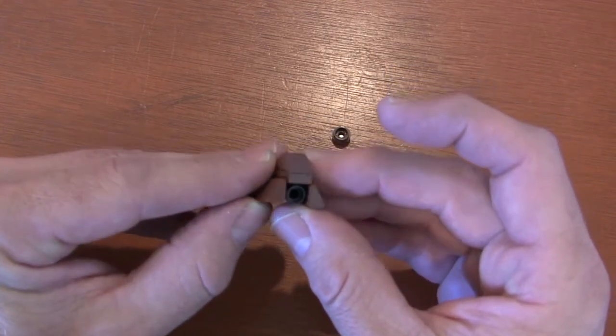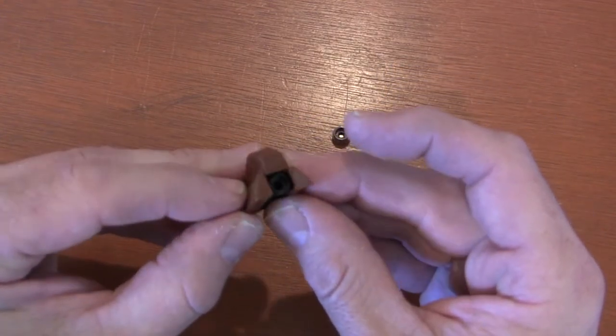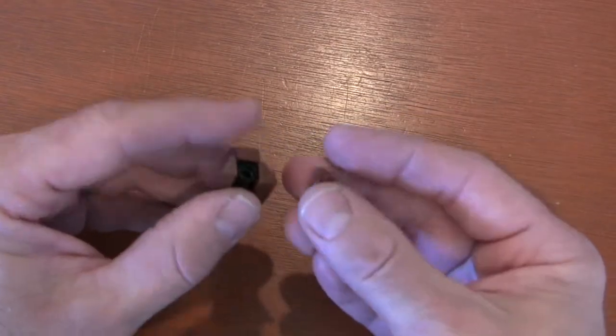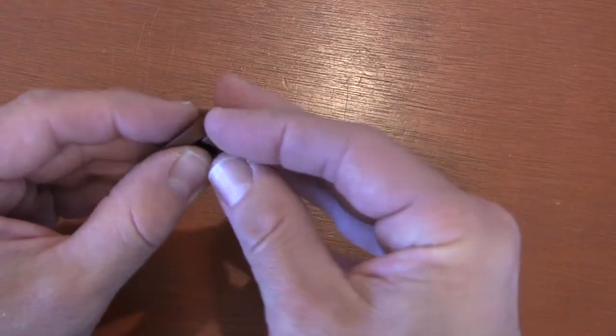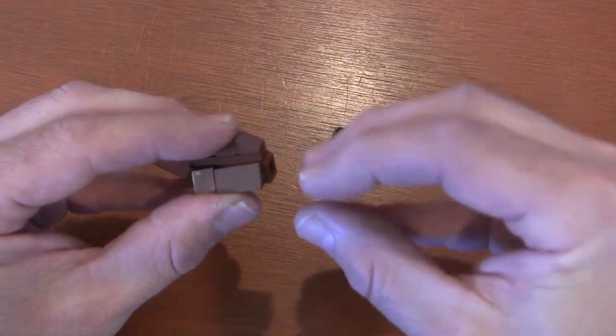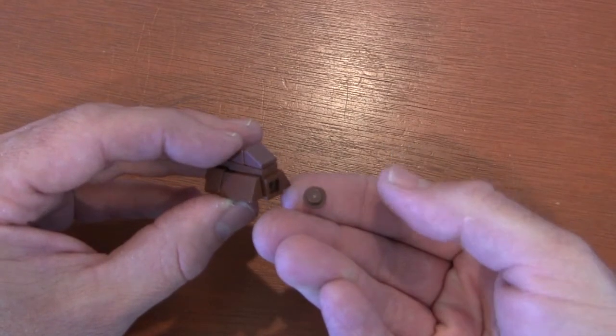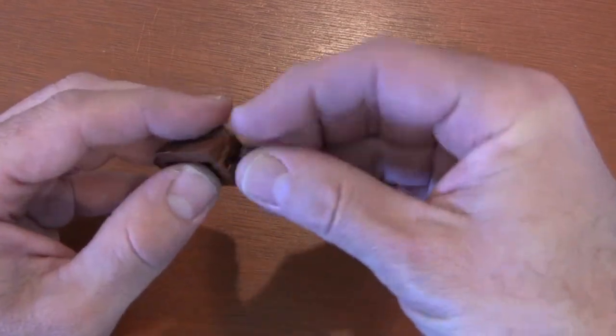Now we've got that little stud exposed in the front there. What we're going to do is get a one by one plate piece and put it backwards so it sticks into that big hole there. And now to make that coned nose of the transport, we're going to get a one by one round plate and just put it right into our one by one plate we just put in.